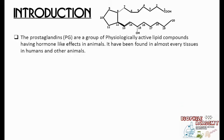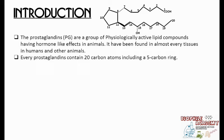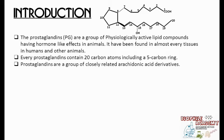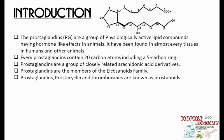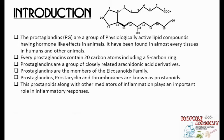Let's move to its introduction. Prostaglandins are a group of physiologically active lipid compounds having hormone-like effects in animals. They have been found in almost every tissue in humans and animals. Every prostaglandin contains 20-carbon atoms including a 5-carbon ring. Prostaglandins are a group of closely related arachidonic acid derivatives and are members of the eicosanoids family. Prostaglandins, prostacyclin, and thromboxanes are known as prostanoids.